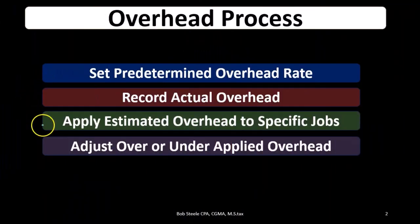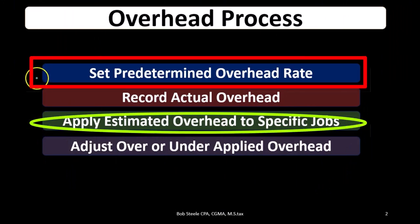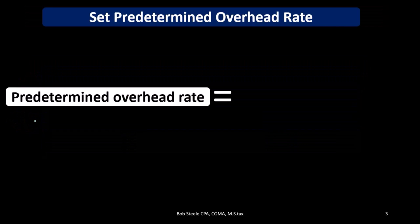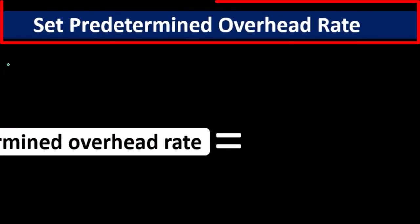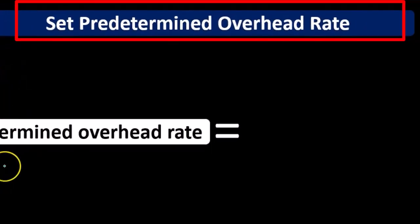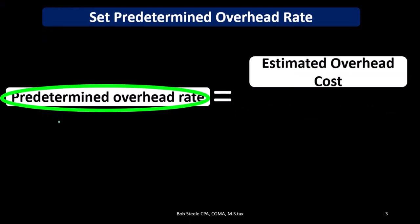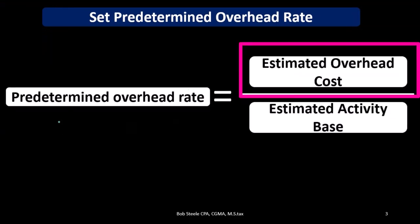We're really looking to set the predetermined overhead rate so that we can apply out the estimated overhead. These two concepts go together — we set the rate in order to apply overhead to jobs. The predetermined overhead rate formula is simply the estimated overhead cost divided by the estimated activity base.